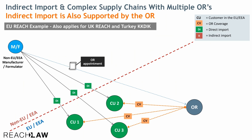Now we have a standard case of only representation. If I take my laser pointer, we have a manufacturer formulator — let's call it the manufacturer to keep it simple — placing a substance on the market here in the EU as an example. The same applies for Turkey and Great Britain, so you can consider these cases analogous. They have appointed an only representative who is currently covering three importers of the substance under direct import conditions.